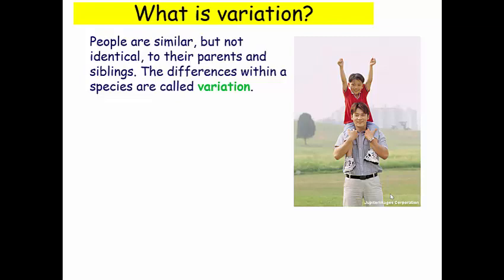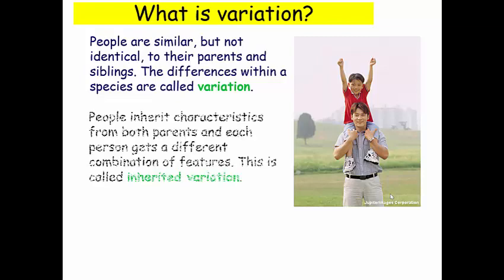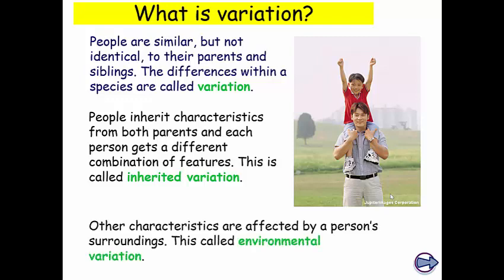People are similar but not identical to their parents and siblings. The differences within a species are what we call variation. People inherit characteristics from both parents and each person gets a different combination of features and we call that inherited variation. Other characteristics are affected by a person's surroundings and that's what we call environmental variation.